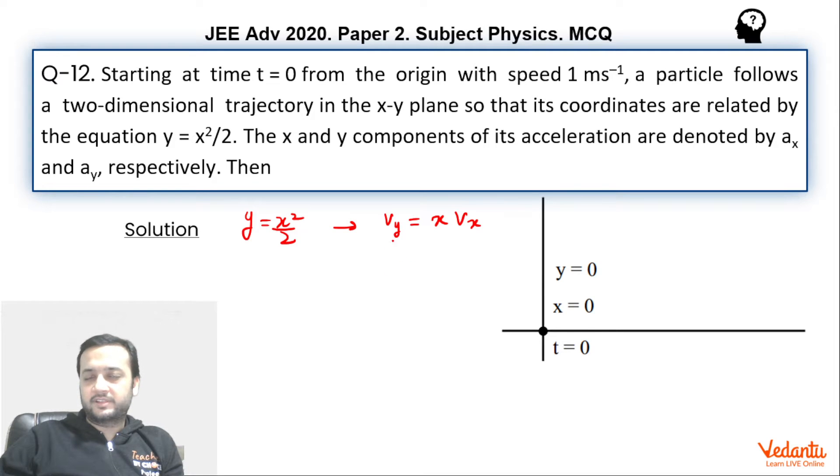One more differentiation of this is going to give us ay is equals to x into derivative of vx which is acceleration in x plus vx into derivative of x which is again vx. So this will become vx squared.